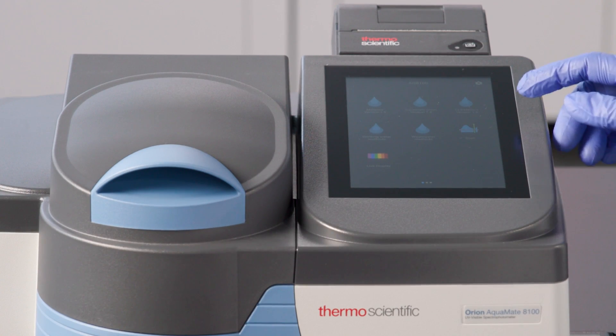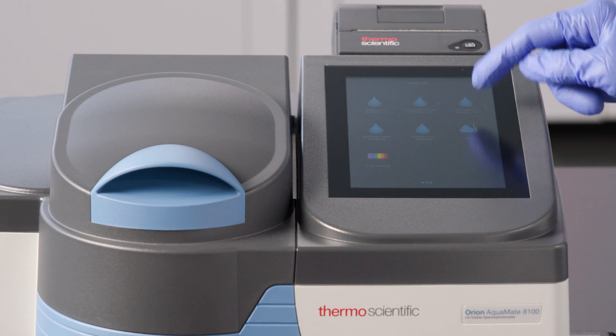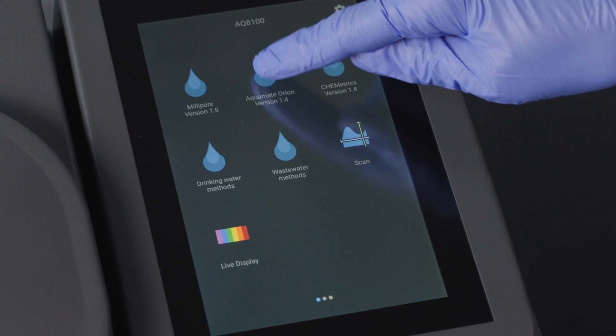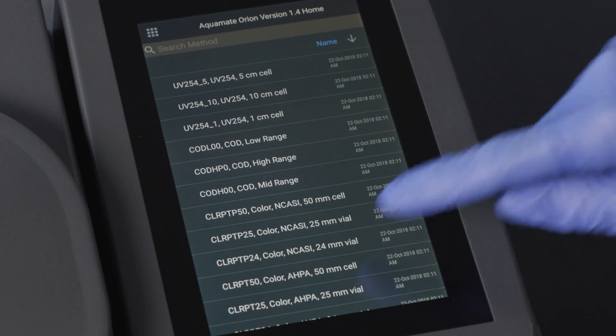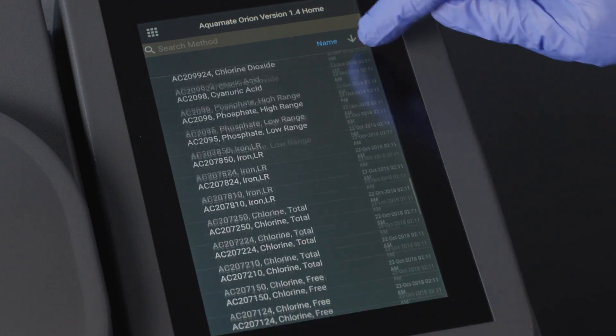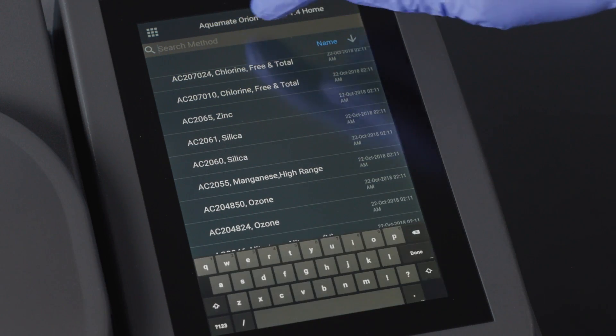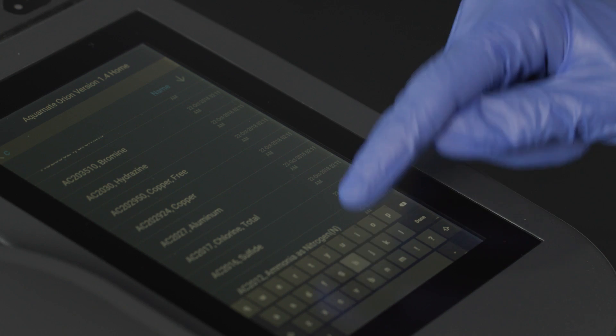We can access this preprogrammed method under the Orion Water Analysis droplet menu. From here, we can either scroll through the available methods or we can select the search bar. When this keyboard pops up, I will enter chlorine as the search parameter.